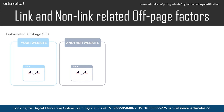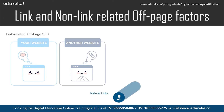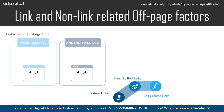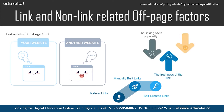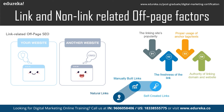When talking about links, these are the links present on the page connecting it to other websites. There are three types: natural links, manually built links, and self-created links. Natural links are created organically, manually built links are ones you want to rank or link to, and self-created links are anchor tags. The major factors influencing these links are the linking site's popularity, freshness of the link, proper usage of anchor text, and authority of the linking domain.